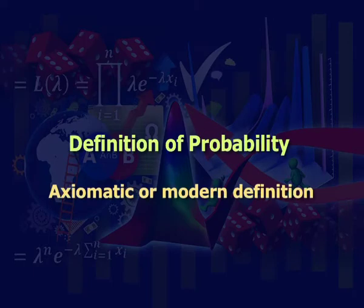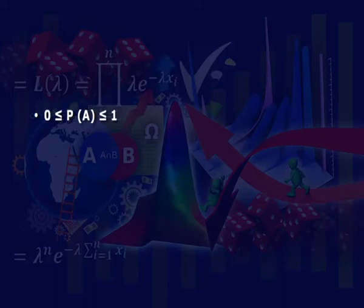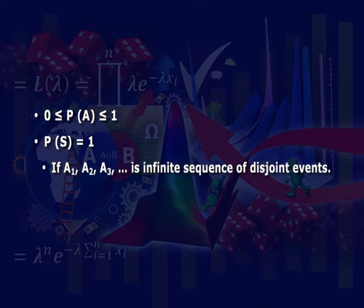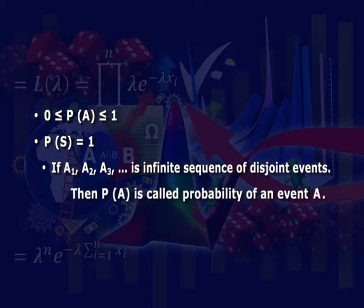Let us see the axiomatic or modern definition. The modern concept of probability was introduced by Russian mathematician Kolmogorov with the help of set theory. If probability of event A is a real number assigned to a subset A of a sample space S, then it is called the probability of event A, provided P(A) satisfies the axioms: first, 0 ≤ P(A) ≤ 1; second, probability of sample space S equals 1; and third, if A1, A2, A3, and so on is an infinite sequence of disjoint events, then the probability of the union of those events follows the additive rule.